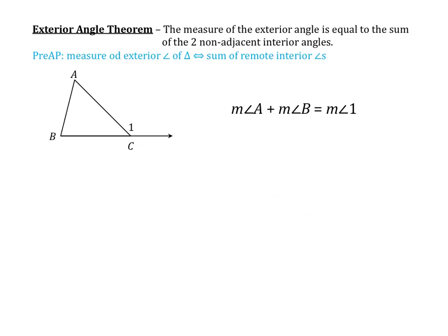Now let's talk about the exterior angle theorem. The exterior angle theorem says that the measure of an exterior angle is equal to the sum of the two non-adjacent interior angles. So here, angle 1 — being the exterior angle — equals the sum of angles A and B, which are the two angles it's not touching. So the measure of angle A plus the measure of angle B equals the measure of angle 1.